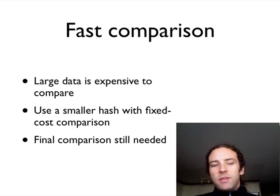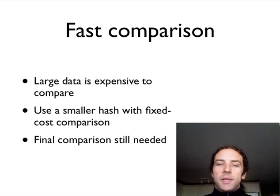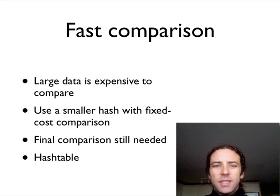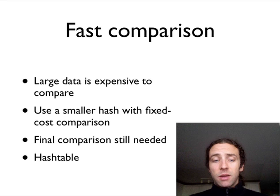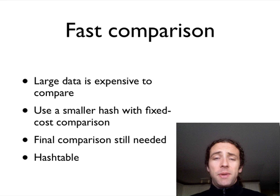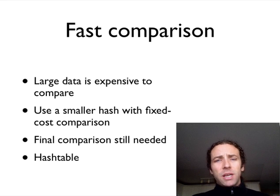If you do get a collision — some hashes are the same — then you do the expensive full comparison in those cases. But that way you're only comparing two gigabytes, not a hundred and one. A final comparison is still needed because multiple pieces of data can have the same fingerprint. For people familiar with computer science, this is exactly the underlying principle behind what's called a hash table, which is one of the more fundamental data structures in computer science.